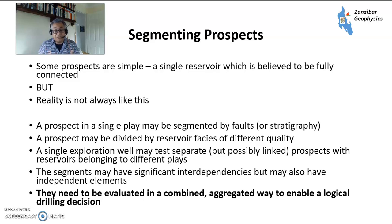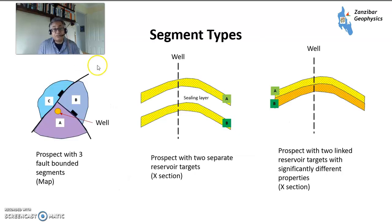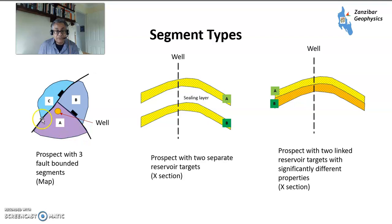These segments need to be evaluated and combined in aggregate to develop a logical drilling decision — how much volume you're going to add with your exploration well. So let's have a look at different segment types. This is a map view of a prospect which is divided by faults. You have a fault here, fault here, giving you segment A, segment B, segment C. If you drill your exploration well in segment A, you prove up segment A but you don't prove up segment C and segment B. The chances of success may increase but you don't guarantee them.